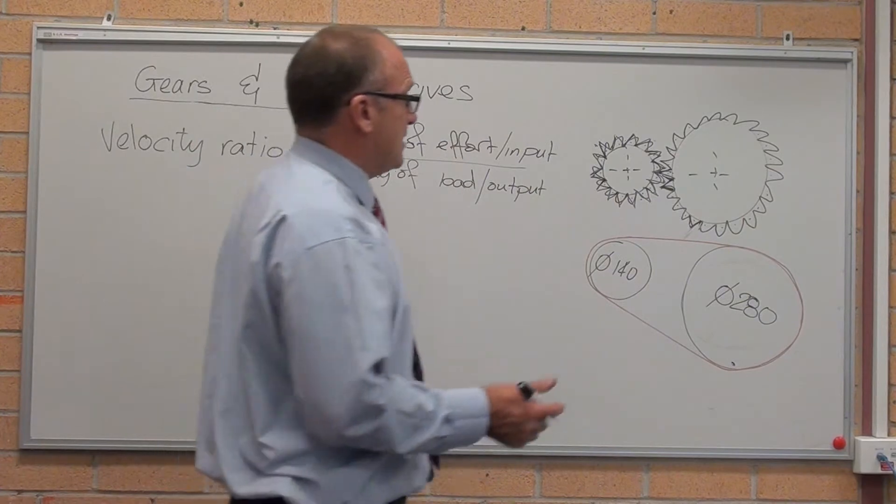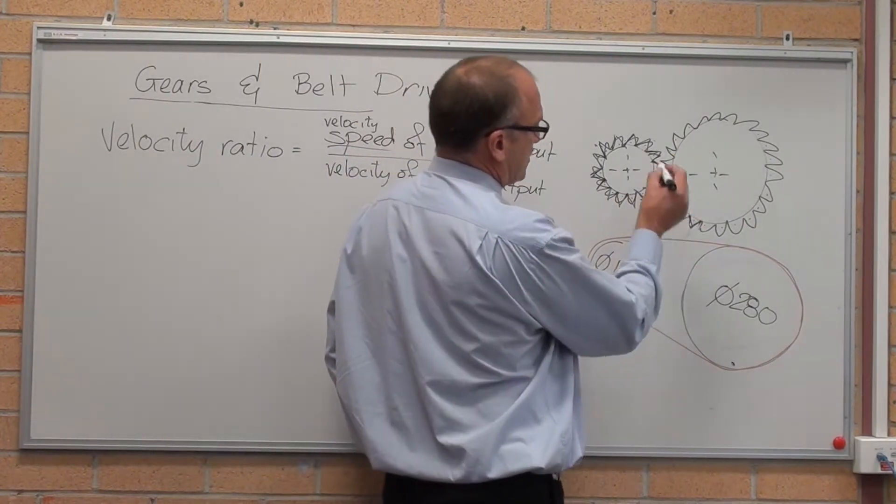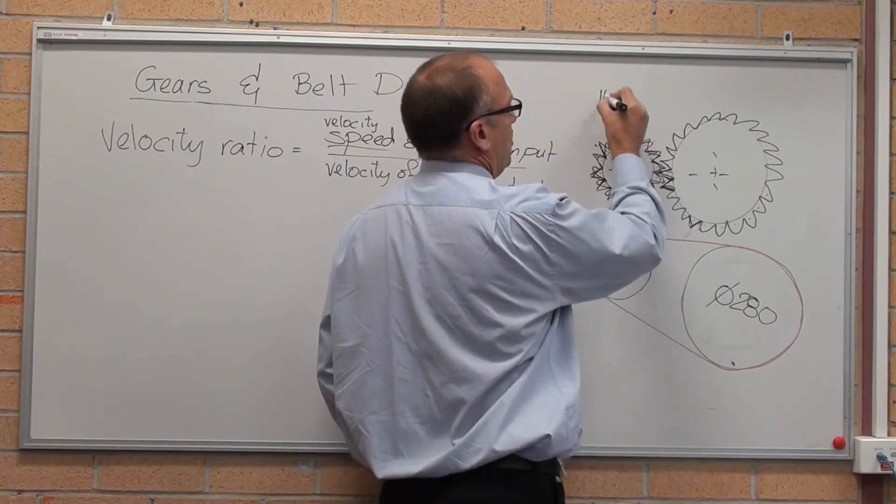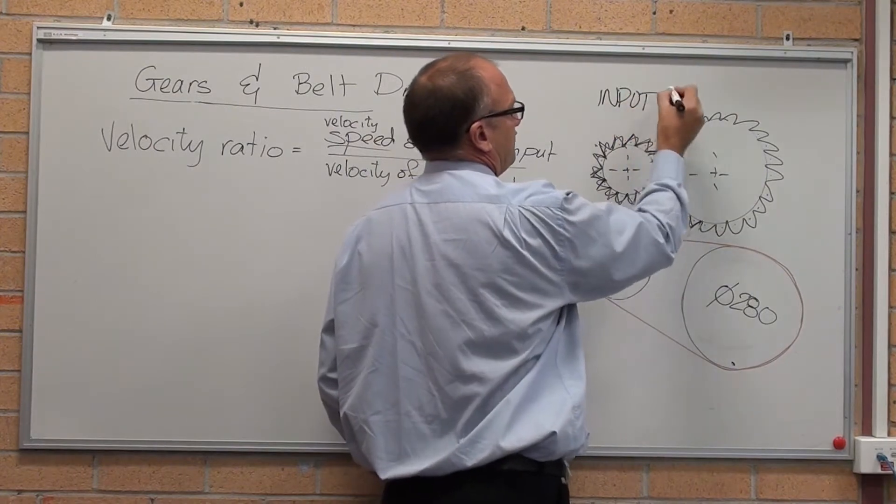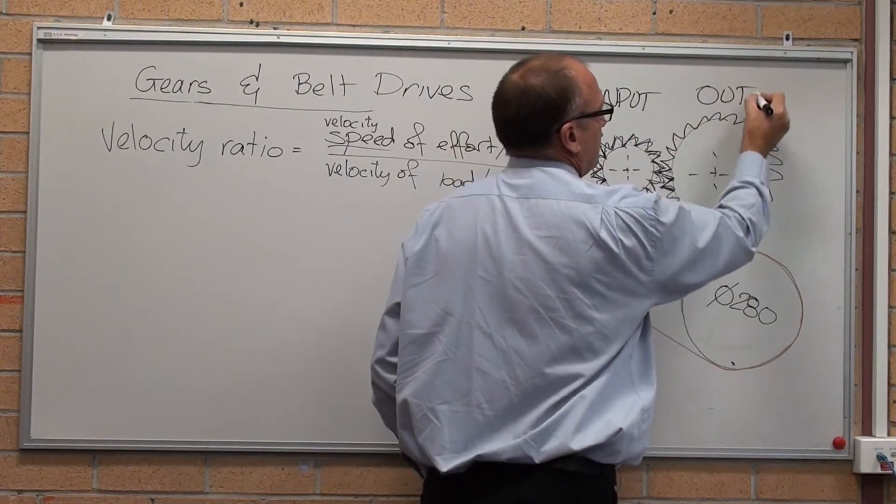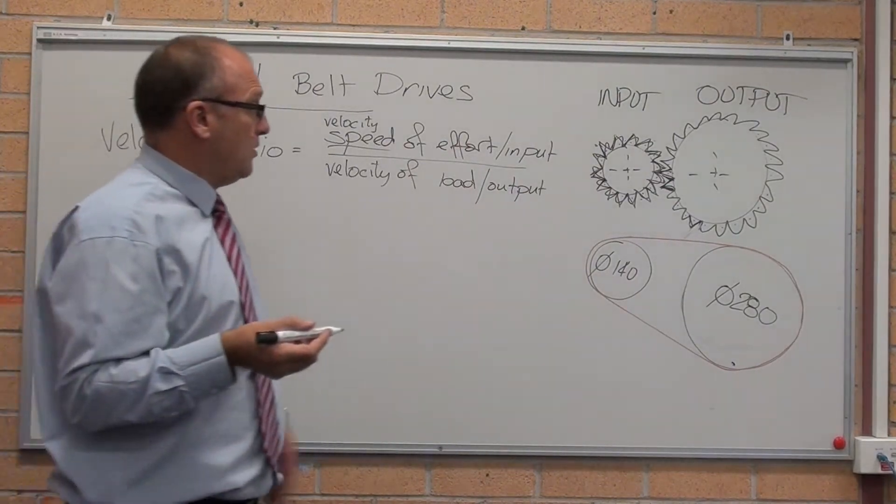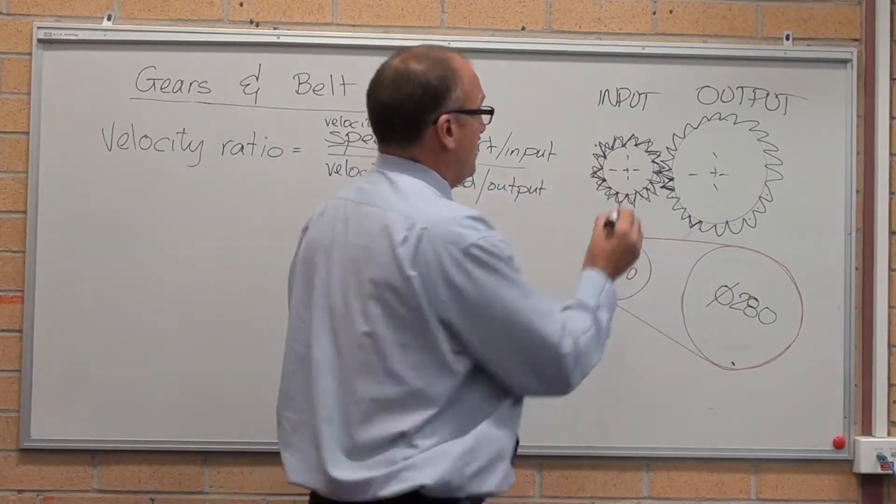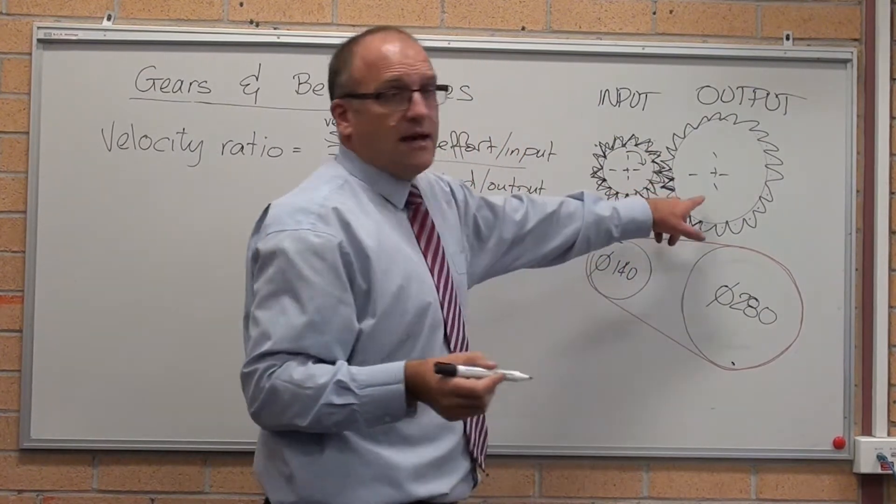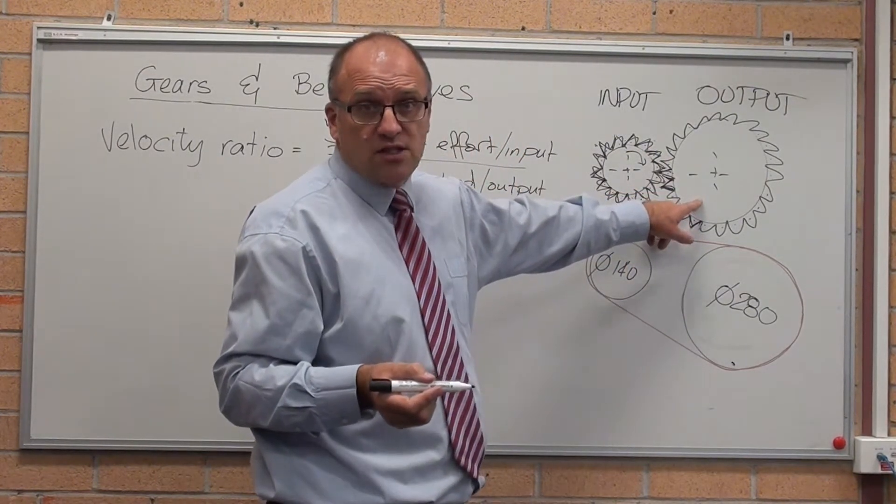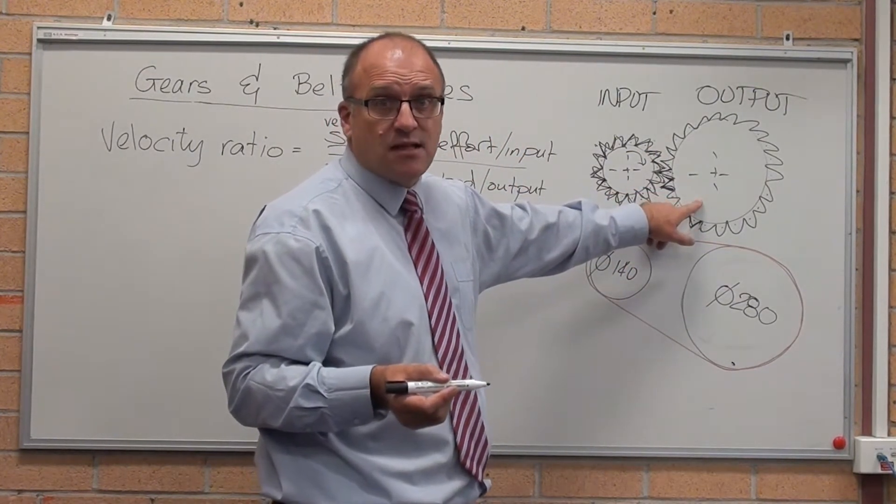If you have a look at over here on the examples, on this side is the input on both of these, there's the output. Let's just have a quick look. It's clear if that's the input, then that is going to be turning slower, so the velocity ratio is less than 1.